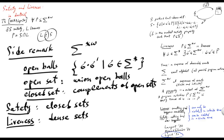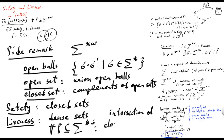And safety would be a closed set, naturally, because all elements which are not in the safety property are actually a union of open balls. And naturally in this topology, every set of traces is an intersection of a closed set and a dense set — which can be proved directly using these simple topological definitions.